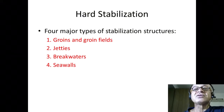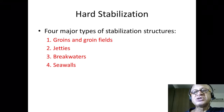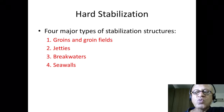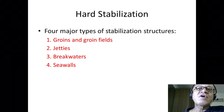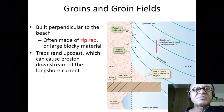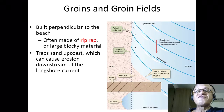Let's look at the major types of stabilization structures: groins and groin fields, jetties, breakwaters, and seawalls. You have probably heard these terms before, especially if you have lived near water or used a boat to go in and out along the coast.